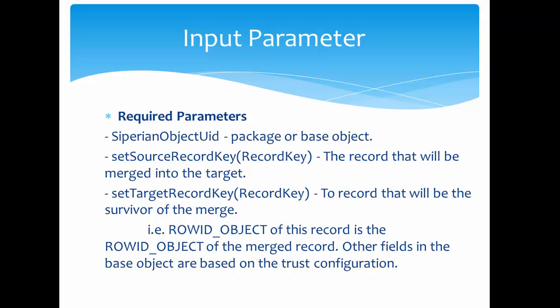The required input parameters are: the SIF object UID, which could be a base object or package name; the source record key, which is the record that will be merged into the target; and the target record key, which is the record that will survive the merge — the winner. The row ID object of the result is the row ID of the merged record. Note that all fields in the base object are resolved based on the trust configuration, so field-level survivorship is determined by trust settings, not simply by which record is the winner.